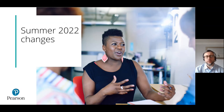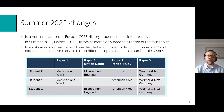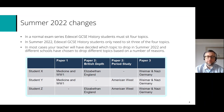Before we look at the timetables I just want to talk a little bit about the summer 22 changes. In a normal exam series, Edexcel GCSE History students must sit four topics. However in summer 22 you only need to sit three topics, and in most cases your teacher will have decided which topic to drop. Different schools will have dropped different topics for different reasons, and on the screen you can see some examples with imaginary students showing which topics could be dropped.